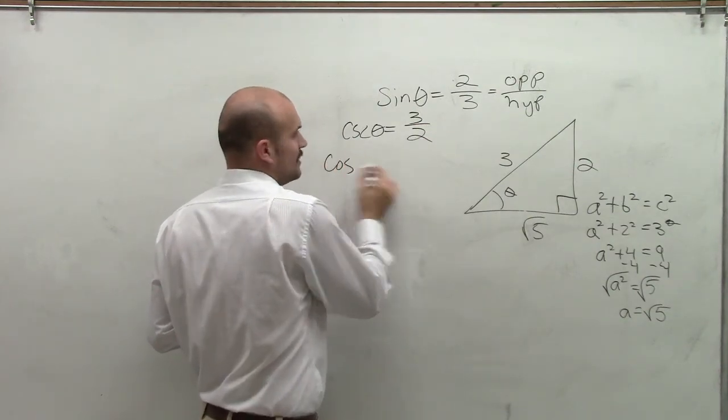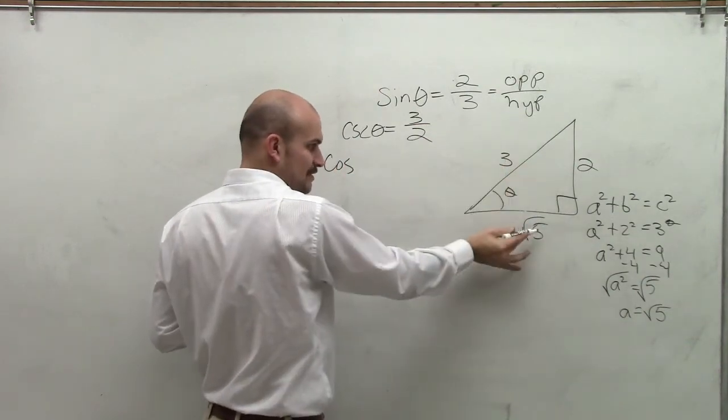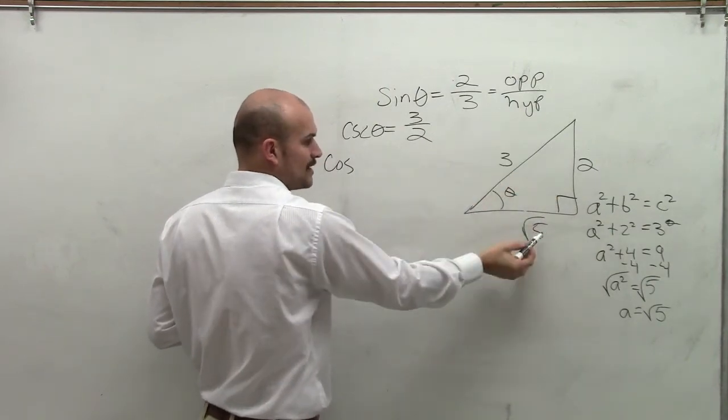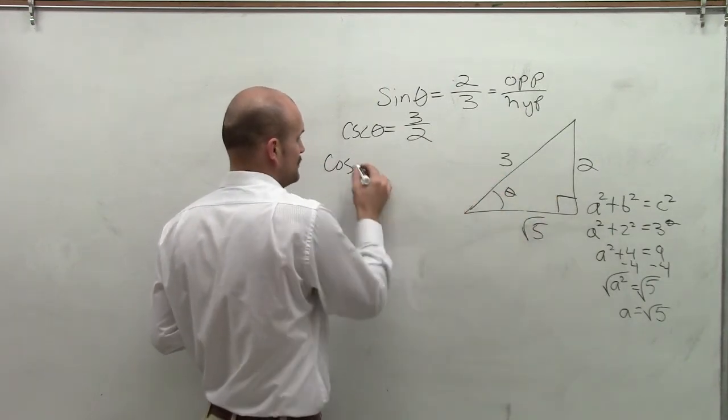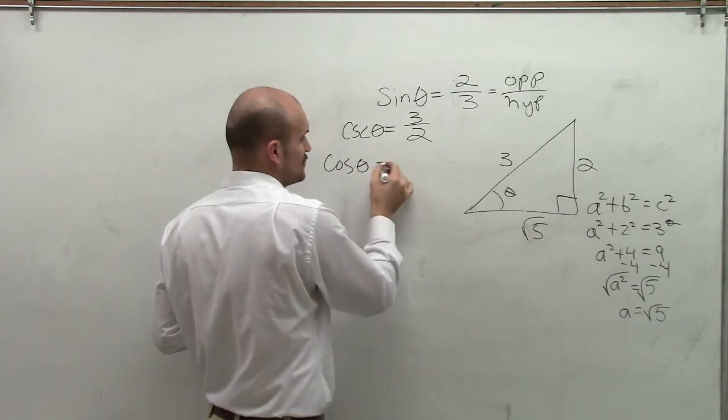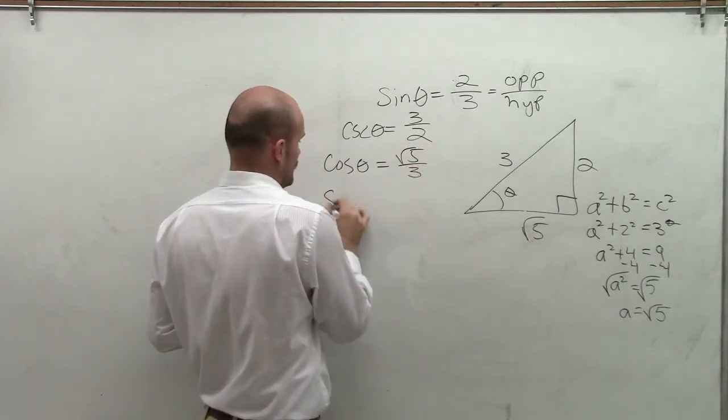Now, dealing with the cosine, instead of opposite over hypotenuse, I'm now going to have adjacent over hypotenuse, as that's the ratio for cosine. So it's square root of 5 over 3.